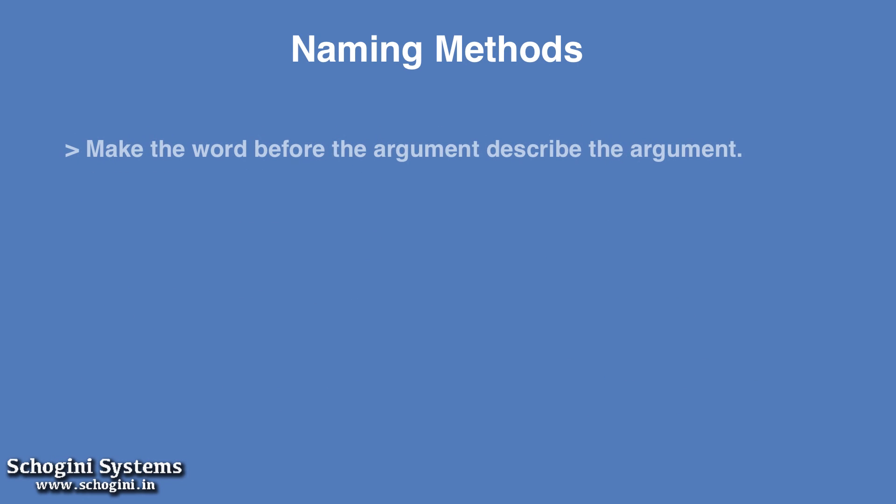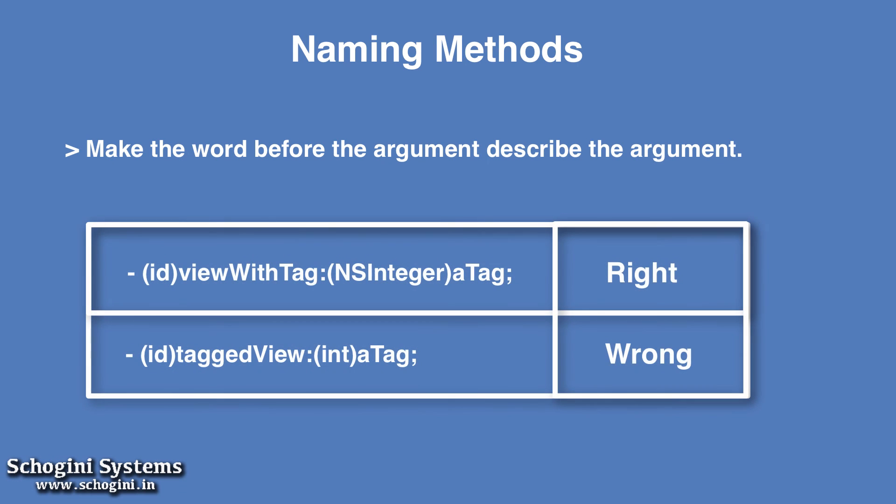In the method, make the word before the argument describe the argument. As per this, in the examples mentioned here, viewWithTag is the right way of naming, but taggedView is wrong.